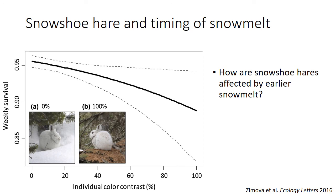Changes in survival rate are likely to have a big impact on snowshoe hare population size. However, there appears to be a lot of variation in the timing of molting, with some southern populations tending to molt much earlier, and some populations that always have a brown coat. This is a good sign — the species has the genetic variation necessary to respond evolutionarily through natural selection to an earlier snow melt, so the decline in survival rate may be temporary as populations evolve to time their molting to the changing climate.